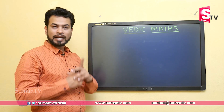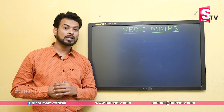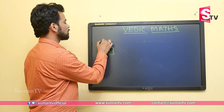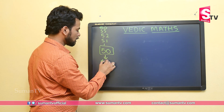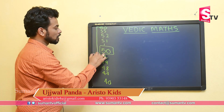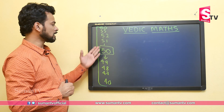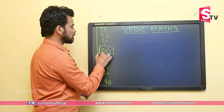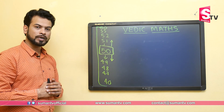Now we will learn the second trick — how to find the squares of numbers nearer to 50. The nearest numbers to 50 are 51, 52, 55, up to 60 above, and 49, 48, 47, down to 40 below. We will cover how to find the squares of numbers from 40 to 60. Taking 50 as a base, numbers above 50 are called above base and numbers below 50 are called below base.